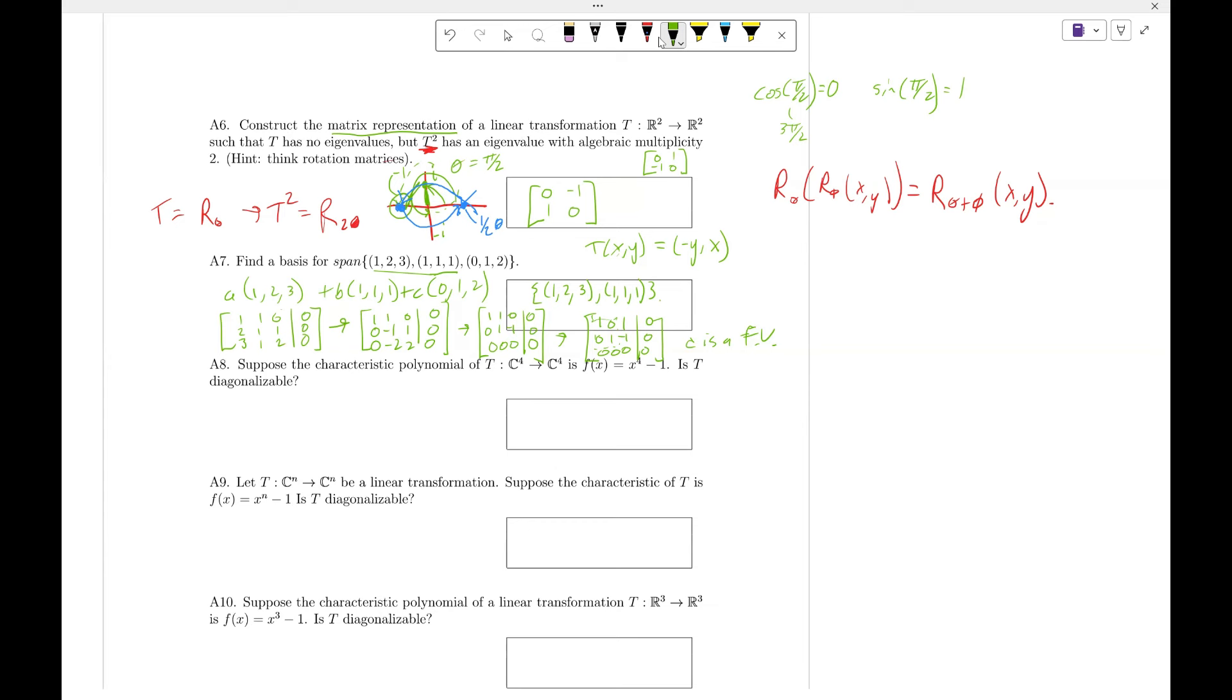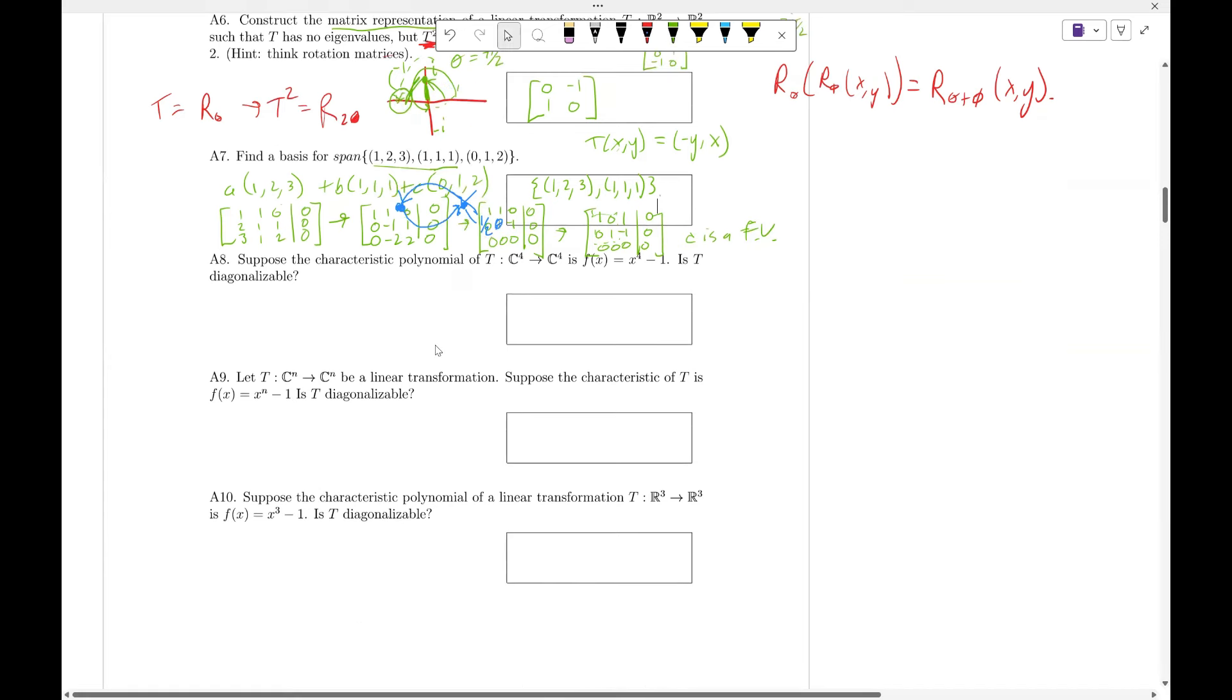Now, suppose the characteristic polynomial of t, which maps C^4 to C^4, is x^4 - 1, is t diagonalizable? Well, what we need to do is if we factor this, it might give us some help.